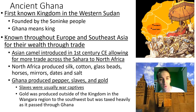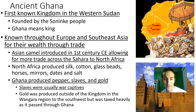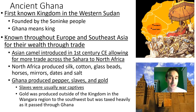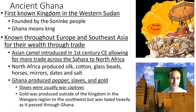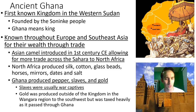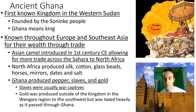North Africa started to produce a whole lot of silk, cotton, glass beads, horses, mirrors, dates, and salt — things that the West Africans wanted. West Africans were producing things like pepper, slaves, and a good amount of gold. Salt was thrown in there too. Slaves were usually war captives, as different tribes and kingdoms were fighting each other. If you were a prisoner of war, you became a slave and would often be sold into slavery across Africa.